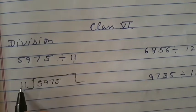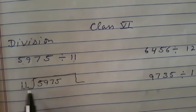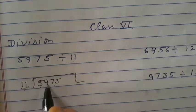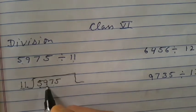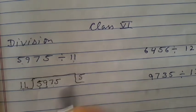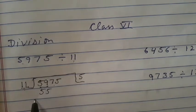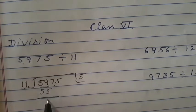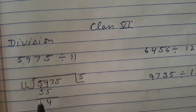Now there are two digits here. We will take the two digits, 59. We will read the table of 11: 11 times 5 is 55, 11 times 6 is 66. This will be greater, so therefore we will take 11 times 5 is 55. Now subtract: 9 minus 5 is equal to 4, and 5 minus 5 is equal to 0.